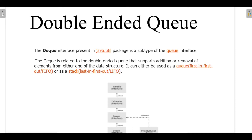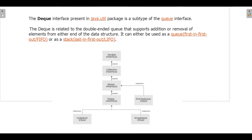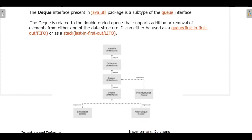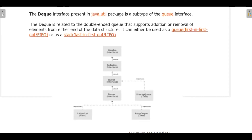Deque helps us arrange data in the form of a stack as well as a queue — that is, both FIFO (first in first out) and LIFO (last in first out). As you can see, there is the Iterable interface, Collection interface, and Queue interface, and Deque is also an interface. Deque has two implementations: the LinkedList class and the ArrayDeque class.